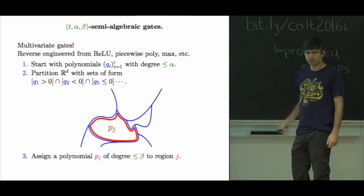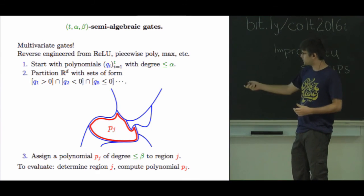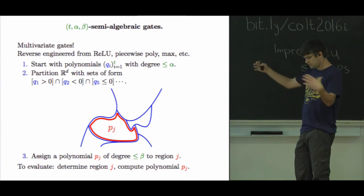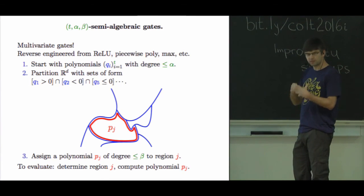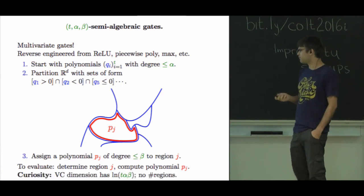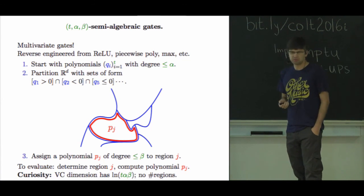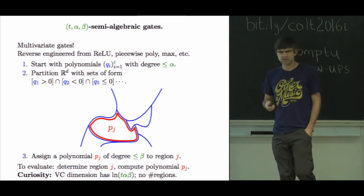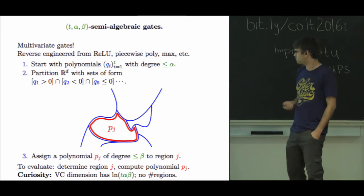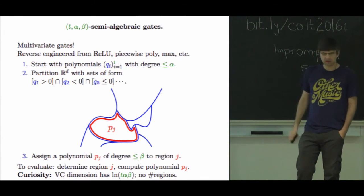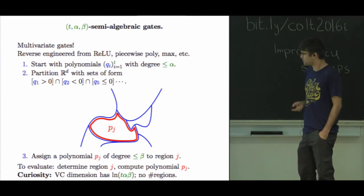So the decision rule for such a function is you find which partition of this - which partition element you're in - you compute the polynomial and you make the output. And even though this sounds really complicated, it basically doesn't have - it's a low complexity object. The VC dimension doesn't really depend on almost anything. It's kind of strange. So this was a useful construction.